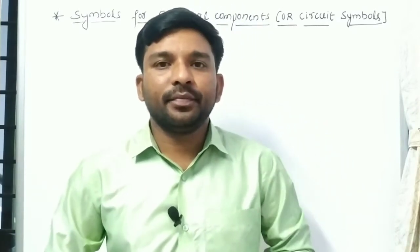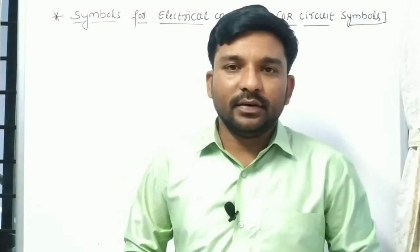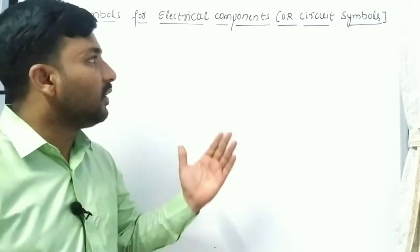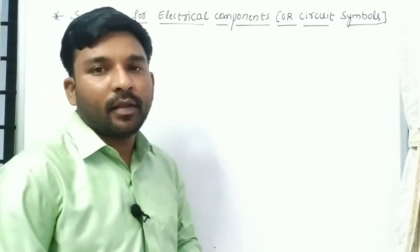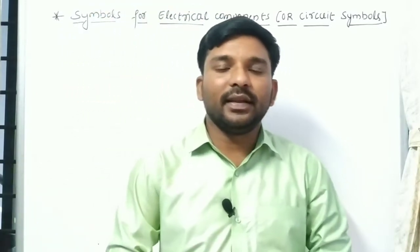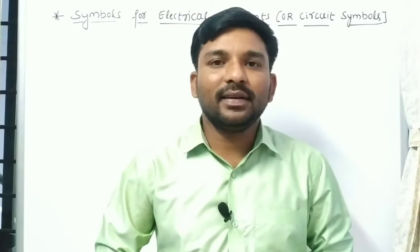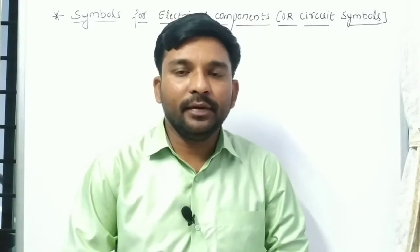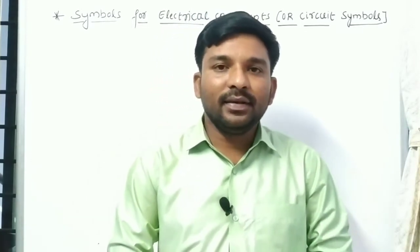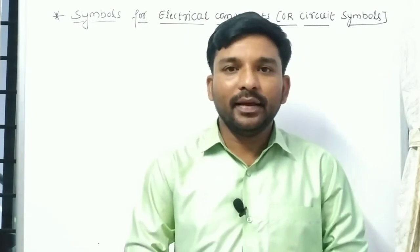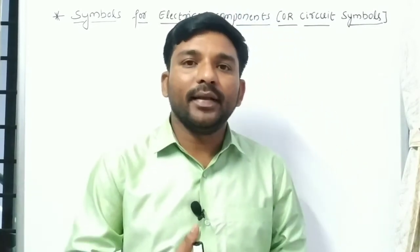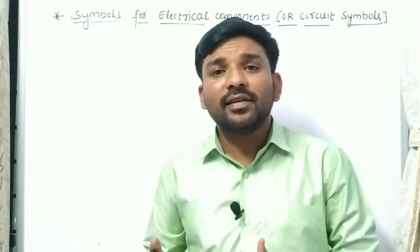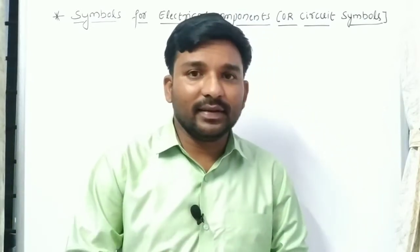Hello students, today we will study the topic of symbols for electrical components, or circuit symbols. We know that an electrical circuit is the closed and continuous path for the flow of current. In an electrical circuit, we use electrical components like a cell, a battery, a switch, an electric bulb, ammeter, voltmeter, and other different kinds of electrical components.